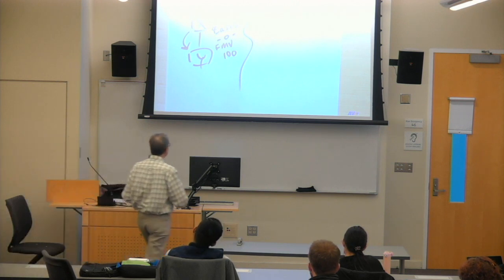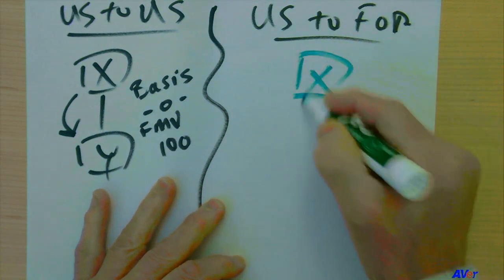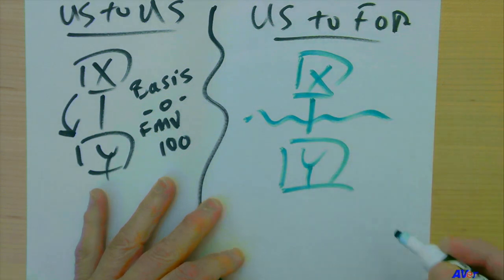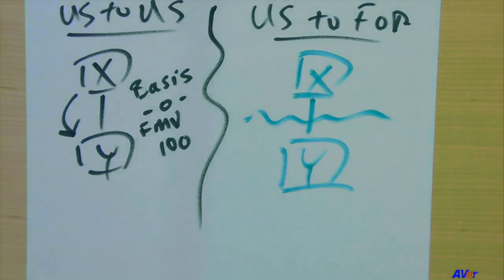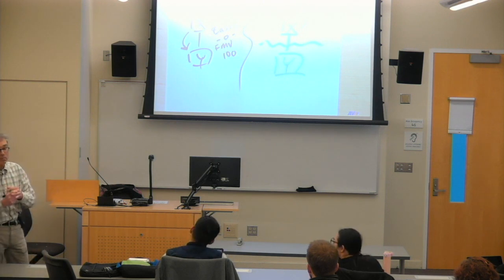Okay. Now let's go to the other side. And now we'll say we have X, we have Y, but there's a border there. And we have the same basis of zero and 100 of fair market value. Now what happens with respect to any future income inside Y? If that asset is sold by Y, will the U.S. realize any benefit?